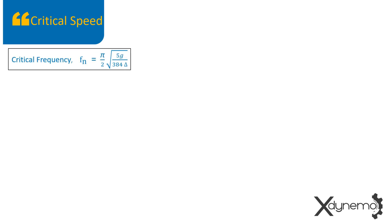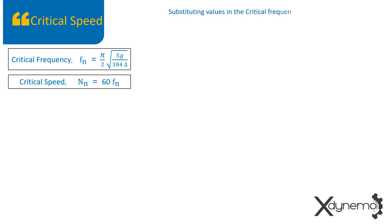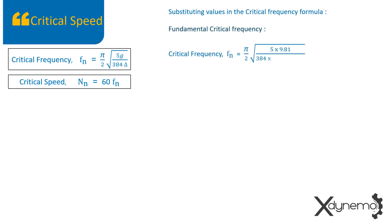Critical speed is the speed at which resonance happens. Critical frequency is given by (π/2) × √(5g / 384δ). The critical speed of the shaft in revolutions per minute is equal to 60 times the critical frequency. On substituting values in the critical frequency formula, the fundamental critical frequency Fn is obtained as 98.78 Hz.